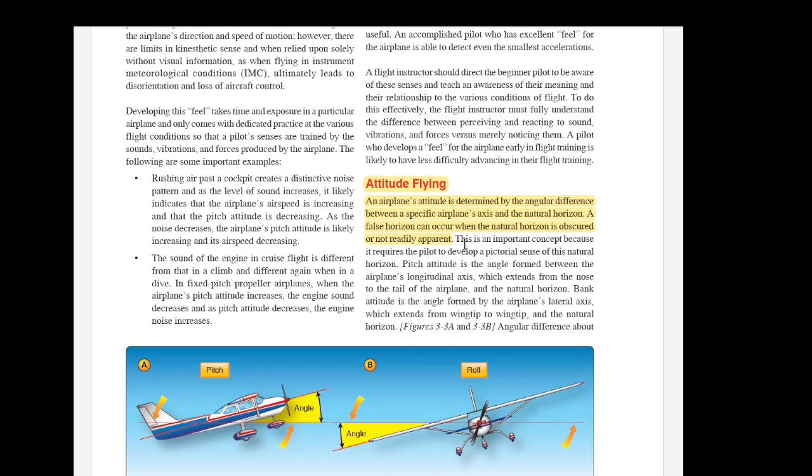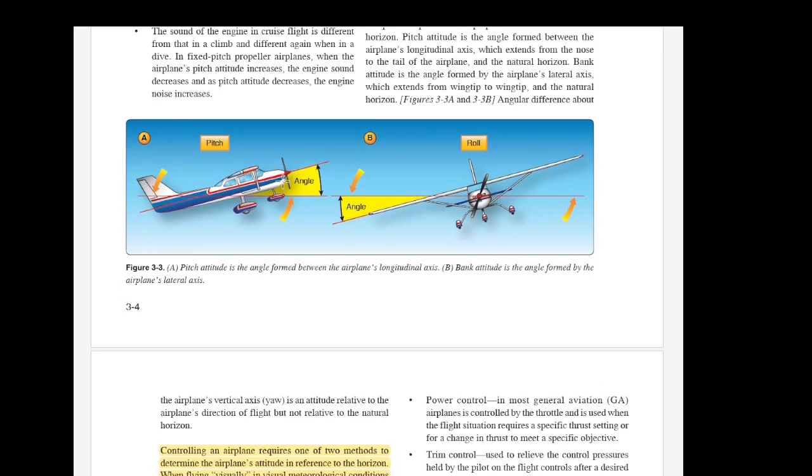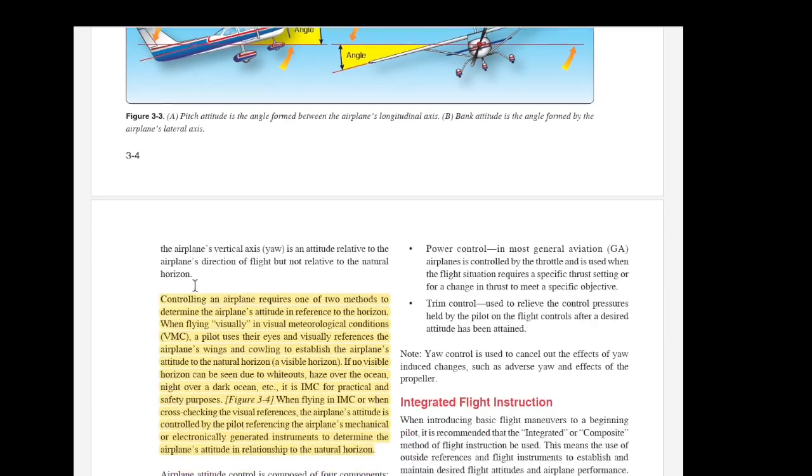When it talks about the natural horizon we can see here that you've got this horizontal line which you could refer to as the aircraft's true level or its horizontal, and the pilot's eye level is going to be something that is parallel to this but obviously from the cockpit rather than the aircraft. Either way you can basically judge the angle of pitch and the roll here based on the horizontal horizon. Pitch attitude is the angle formed between the airplane's longitudinal axis. Bank attitude is the angle formed by the airplane's lateral axis.